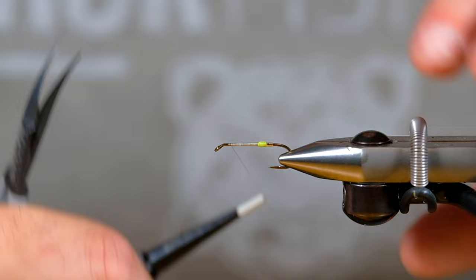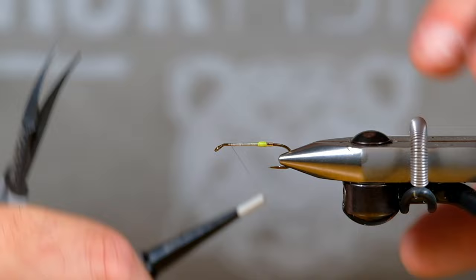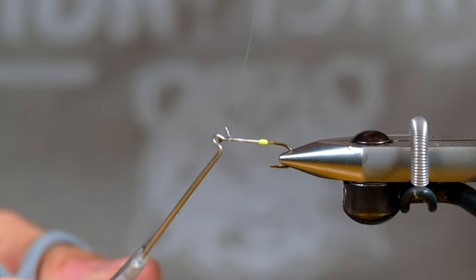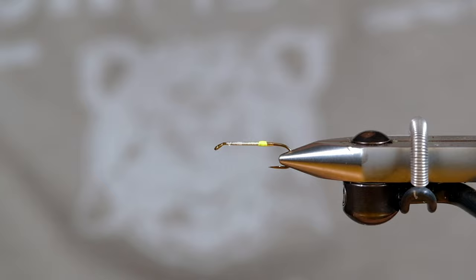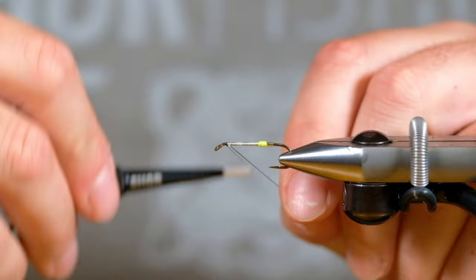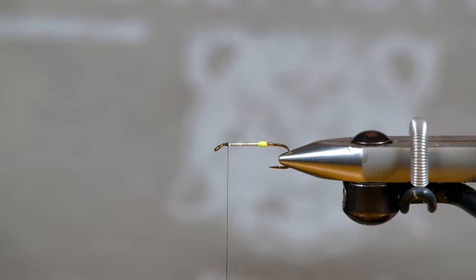You'll see bodies tied in a million different ways on this pattern too. All right, I am actually gonna switch off of the white for a black UTC in the same size. As I was saying, the bodies on these you'll see them tied thick, thin, sometimes with peacock. The way I like to fish this pattern is I like to fish it with a very skinny body.